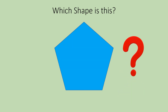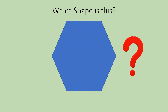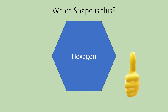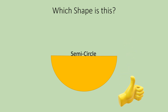Which shape is this? This is pentagon. Which shape is this? This is hexagon. Which shape is this? This is semi-circle.